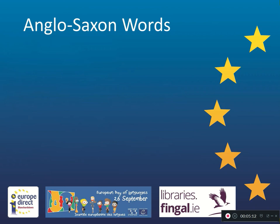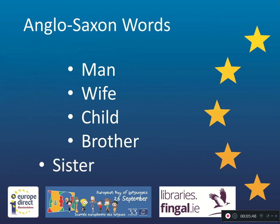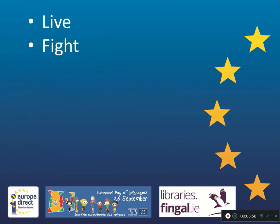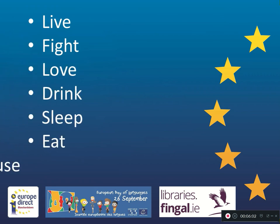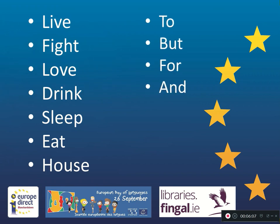Anglo-Saxon words had a huge influence on modern day English. The Anglo-Saxon languages are what we call the Germanic languages — they gave birth to the later German language as well as other Scandinavian languages such as German, Dutch, Swedish, Flemish and, of course, English. A lot of family-related words come from the Anglo-Saxons: man, wife, child, brother and sister — these are all Germanic words we use almost every single day. They also gave us short everyday words: live, fight, love, drink, sleep, eat, and house. Words such as to, but, for, and, at and in — extremely common words that come from these Germanic languages spoken by the Anglo-Saxons.